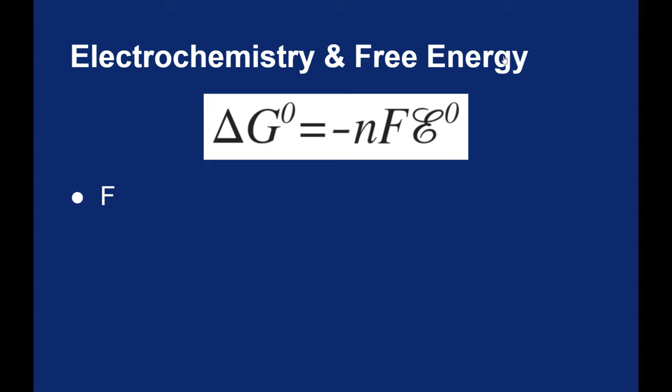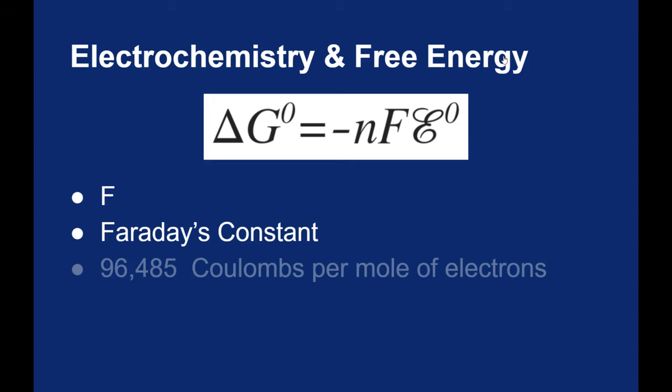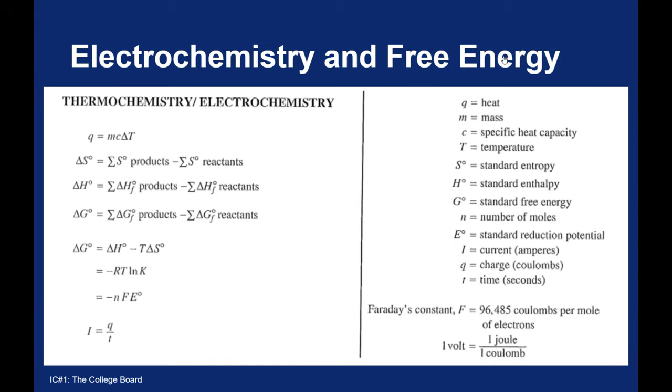F is Faraday's constant, at value 96,485 coulombs per mole of electrons. This is the one that we saw on our equation sheet from the college board. So, here's our equation: delta G equals NF times the electric potential. Remember, the college board uses just a capital E for electric potential, not that fun epsilon. N is the number of moles, in this case, the number of moles of electrons.